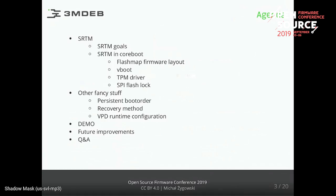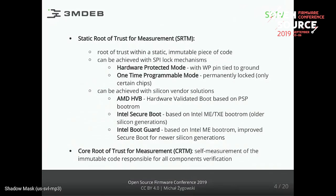So what is the static root of trust for measurement? It is a root of trust based on a piece of immutable code. Each root of trust requires its own core, which is the basement of the whole chain of trust — we call it the Core Root of Trust for Measurement, also CRTM. In coreboot and other measurement systems it is realized as a self-measurement placed in this immutable piece of code, which is the base for all other measurements and verification of next executed components.